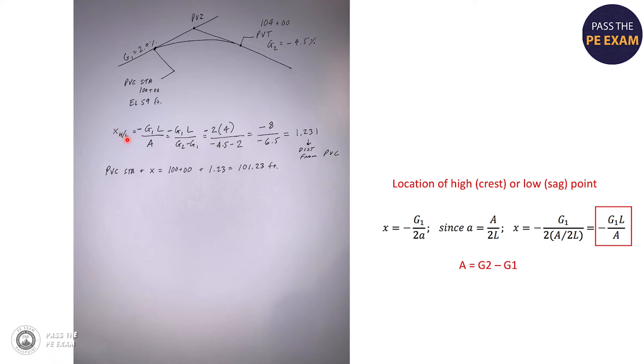So you can see that I've written it out here, this X of the high point or low point. In our case, it's the high point. I've added in the numbers. So we have minus G1, which is two times four, which is the length of the curve, over G2 minus G1, which is negative 4.5 because the slope's going down minus G1, which is two. And remember, whenever you subtract from a negative number, the number gets bigger. So here you have negative eight over negative 6.5. The negatives cancel out and you get 1.231.